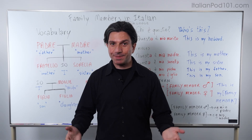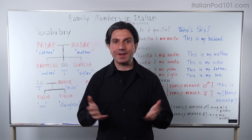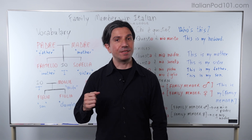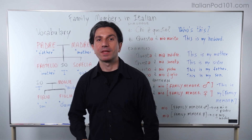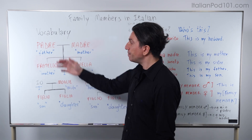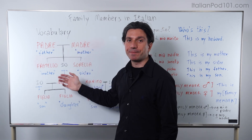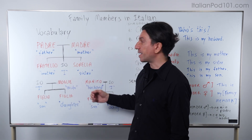Let's begin by covering the basics — the immediate family. Here is a simple family tree. You are here — io, I.